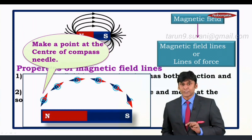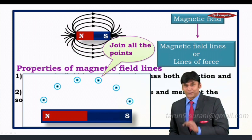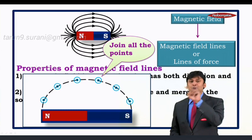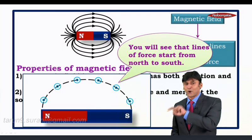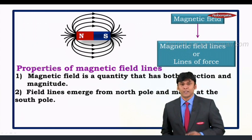After marking all the points, join them together. When you join all the points, you get a curve starting from north to south. This shows that lines of force start from the north pole and go to the south pole.